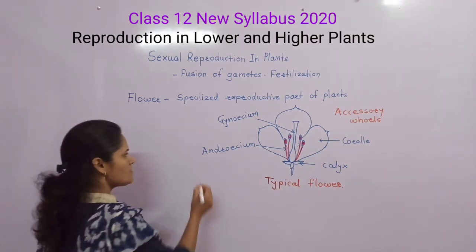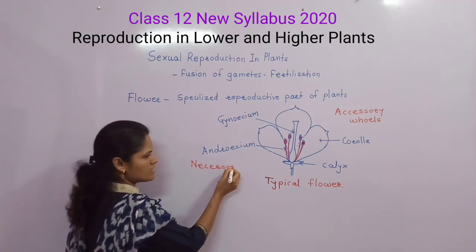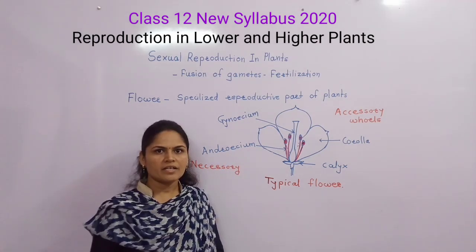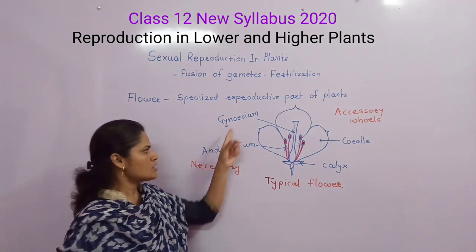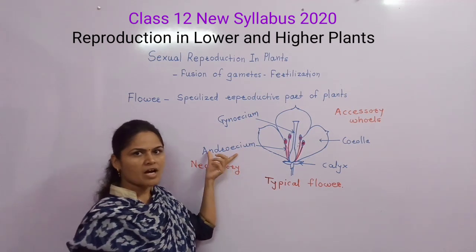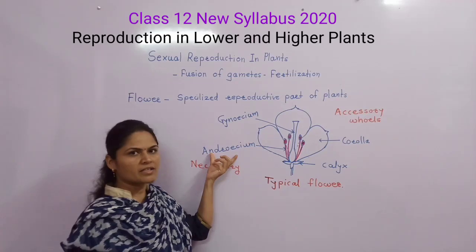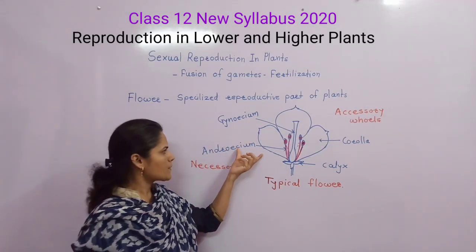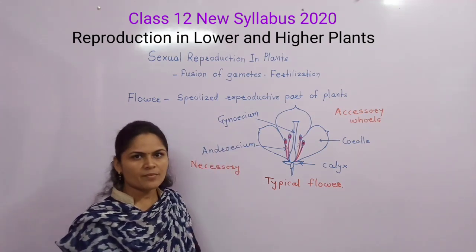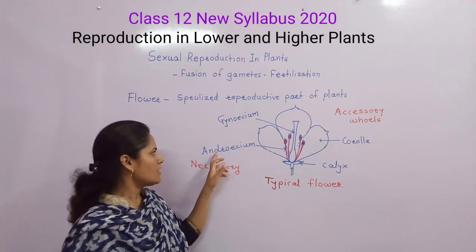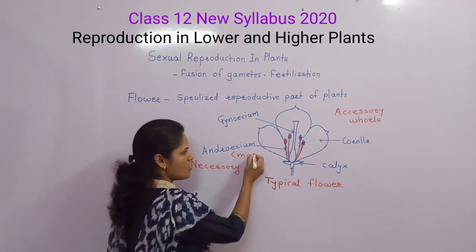The second type is necessary whorls — the most essential whorls that directly take part in the process of reproduction. Gynoecium and androecium are the two necessary whorls. Androecium is the male reproductive part, and gynoecium is the female reproductive part of a flower.